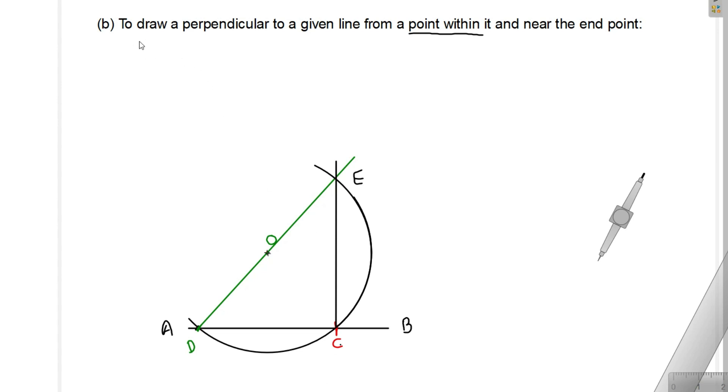So this is the second method that we have drawn here, to draw a perpendicular to a given line from a point within it and near to the end point. So this point C is within this line AB and C is near to the end point B.